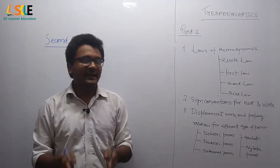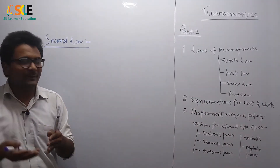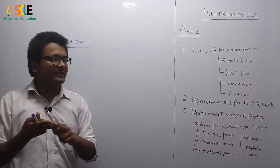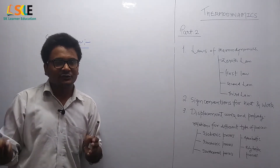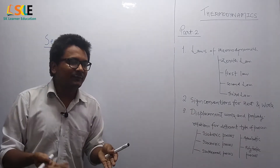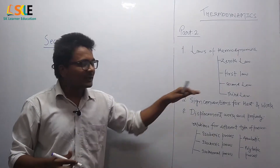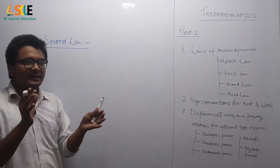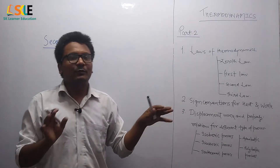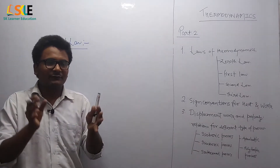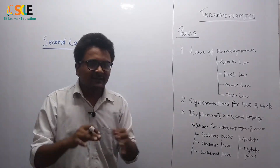Now we will see the second law of thermodynamics. The statement of the second law is derived in a negation manner. We can see two statements of the second law: the first is the Kelvin-Planck statement and the second is the Clausius statement. The second law states that if we are giving a certain amount of heat to a system, the complete conversion of heat to work is impossible — even in the ideal case. That is the general statement of the second law.